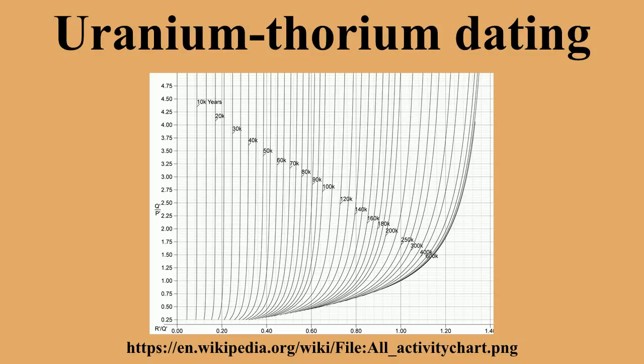Instead, the uranium-thorium technique calculates an age from the degree to which secular equilibrium has been restored between the radioactive isotope thorium-230 and its radioactive parent uranium-234 within a sample.